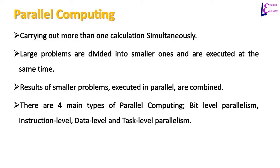There are four main methods of parallel computing to execute different parts of a program simultaneously. They are bit level parallelism, instruction level parallelism, data level parallelism, and task level parallelism.